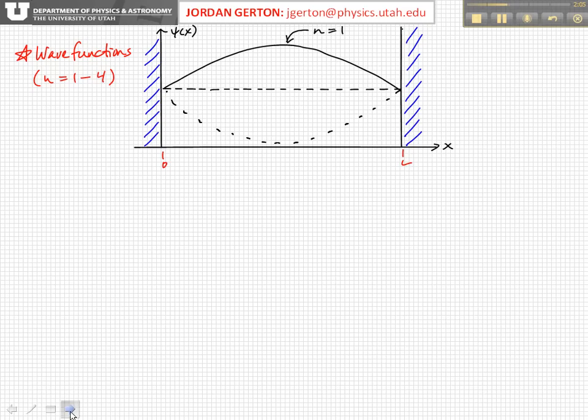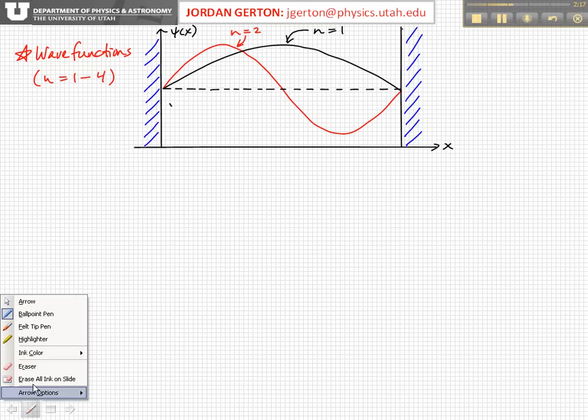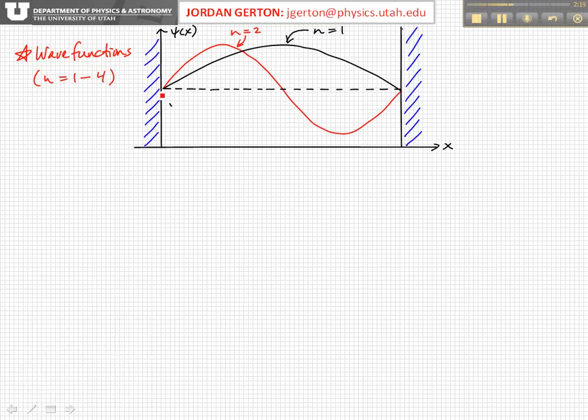The next wave function for n equals two looks like that. And again, we should recognize that a half a period later, we get something that looks roughly like that. So it's oscillating, a standing wave wave function.